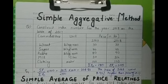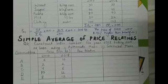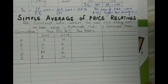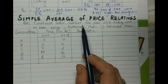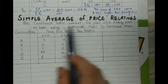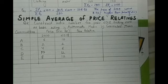So the next topic is simple average of price relatives. I have picked up another numerical for you. Here you have been asked to construct an index number for the year 2018 taking 2010 as the base using both arithmetic mean method and geometric mean method.